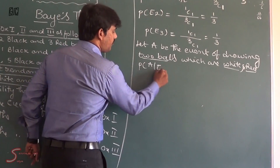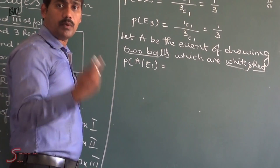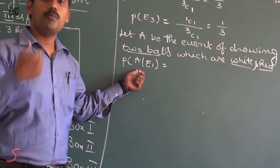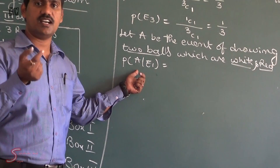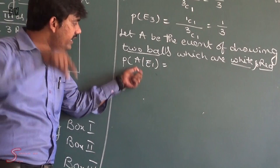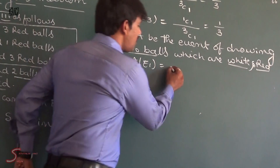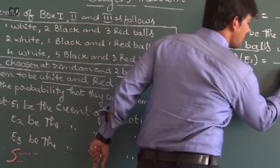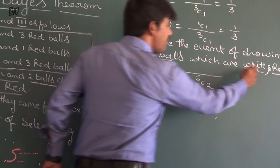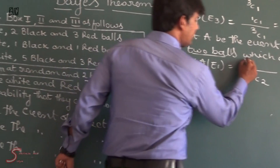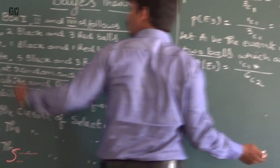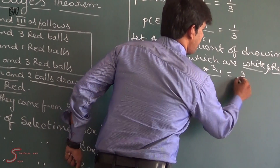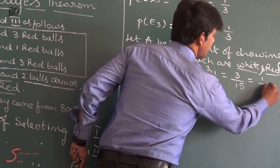Now we need the conditional probability P(A|E1) — the probability of drawing two balls which are white and red from already selected box 1. In box 1 the total number of balls is 1 + 2 + 3 = 6. Out of 6 I am going to select 2 balls. Those two balls should be white and red: 1C1 (white) into 3C1 (red), divided by 6C2, which equals 3 by 15.